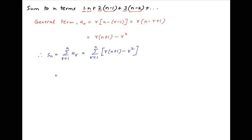Plugging in the value of ur obtained above, Sn can be written as n plus 1 summation r minus summation r square where r goes from 1 to n.